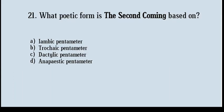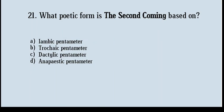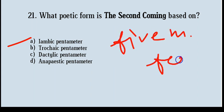Next question. What poetic form is 'The Second Coming' based on? Options: iambic pentameter, trochaic pentameter, dactylic pentameter, anapestic pentameter. Correct answer: option number A, iambic pentameter. It is a line of words with five metrical feet, each consisting of one short syllable followed by a long syllable. 'The Second Coming' is written in blank verse, which means there is no rhyme scheme.